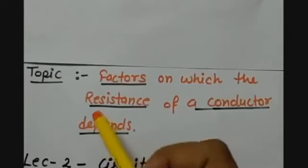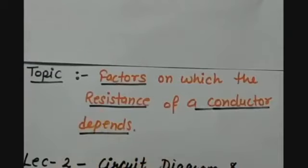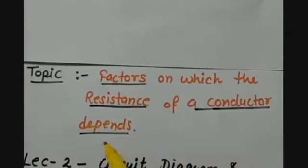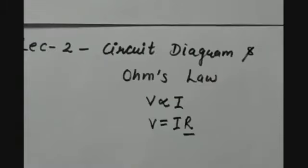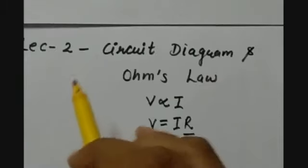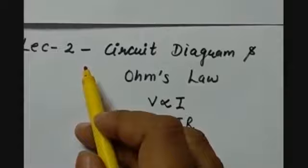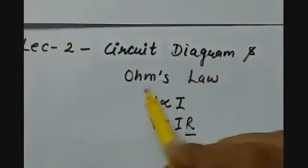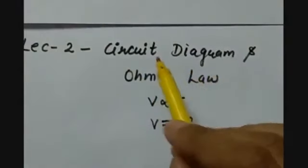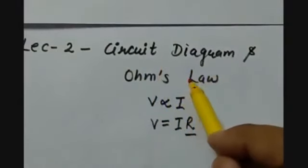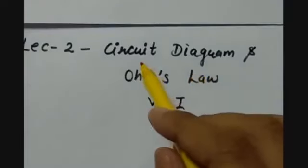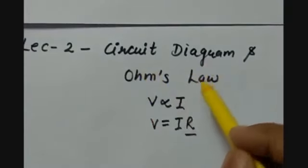In today's lecture, we are going to study about the factors on which the resistance of a conductor depends. As in our previous lecture, that is lecture number 2, we have studied about circuit diagrams and Ohm's law. We have done various symbols for electrical components which we use in the circuit diagrams, and we have also done Ohm's law.